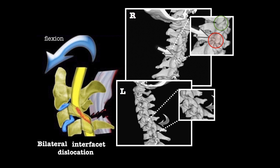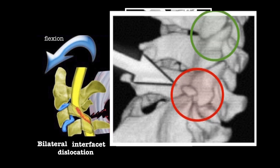Bilateral interfacet dislocation is caused by hyperflexion, causing anterior dislocation of the vertebral body of greater than 50% of vertebral body width. This is associated with extensive soft tissue and cord damage and is an unstable dislocation. As shown by the red circle, the superior articular facet lies anteriorly compared to its normal position (outlined in green), and this occurs bilaterally.